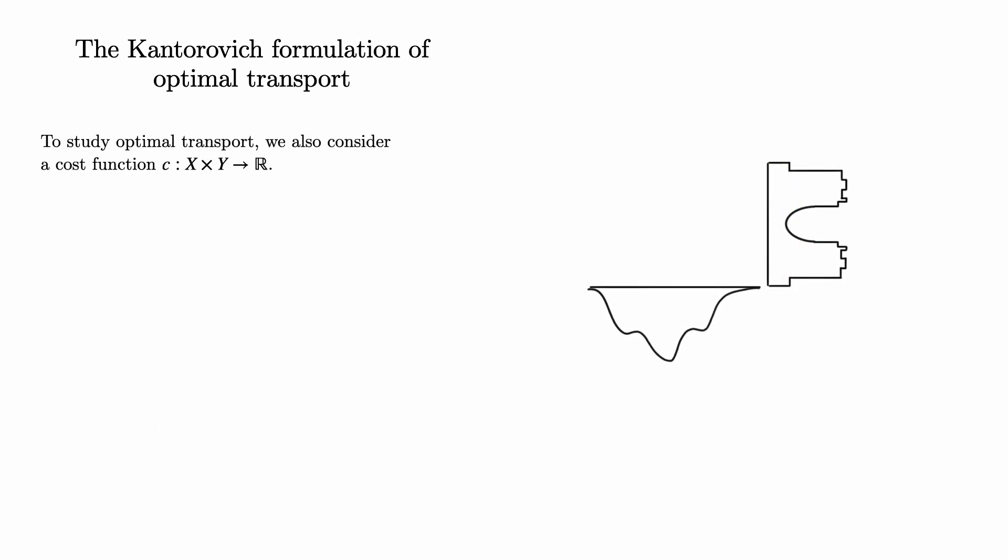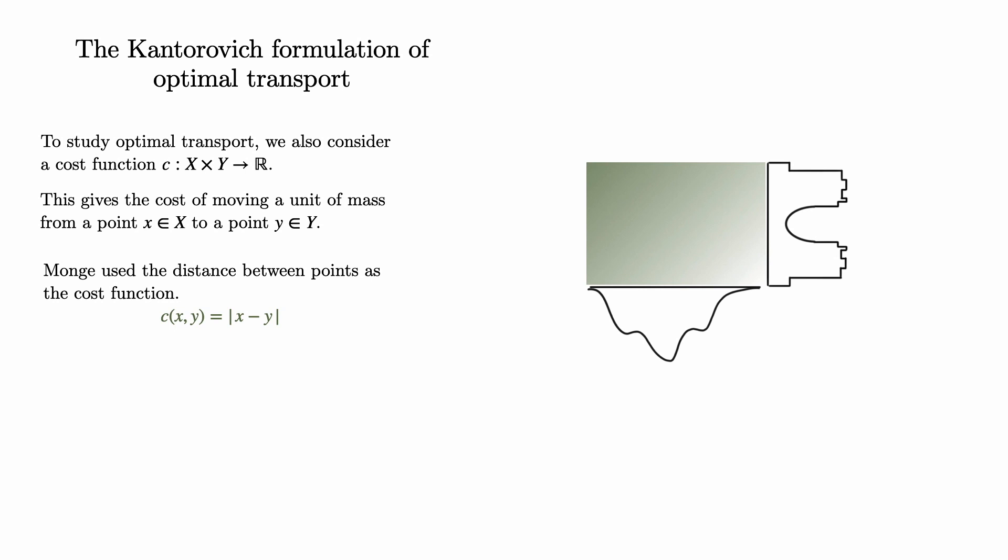In order to discuss optimal transport, we also need a cost function, which is the cost of moving mass from a point in x to a point in y. We want to suppose that the cost of moving a unit of mass from a point x to a point y is the distance between x and y. However, for many applications, it's preferable to use the squared distance cost instead, which is what we'll do for most of the rest of this talk.